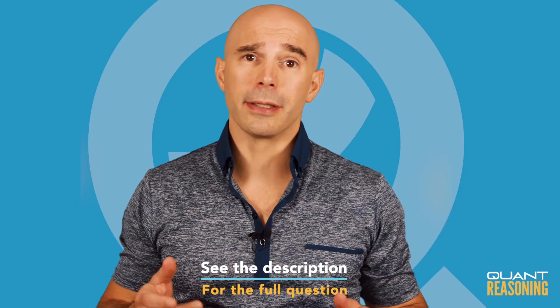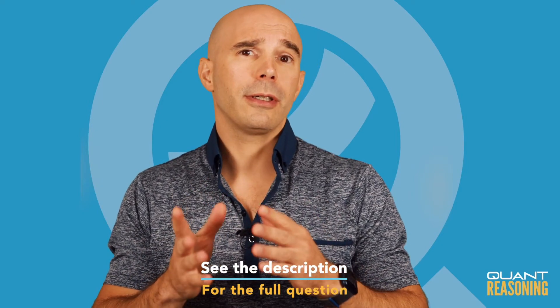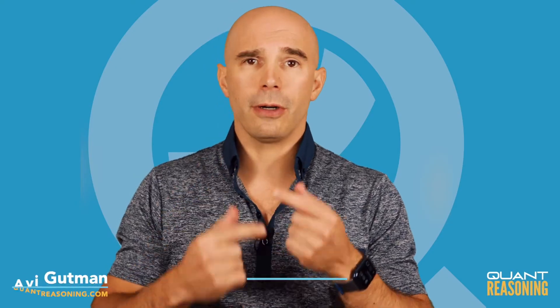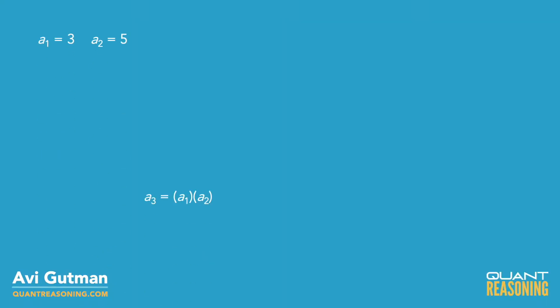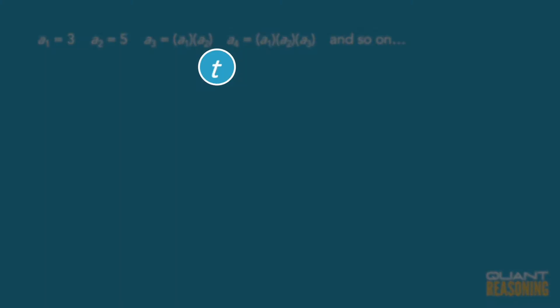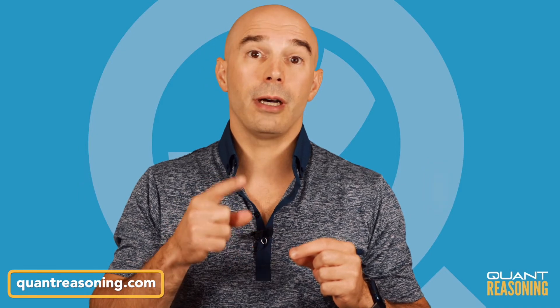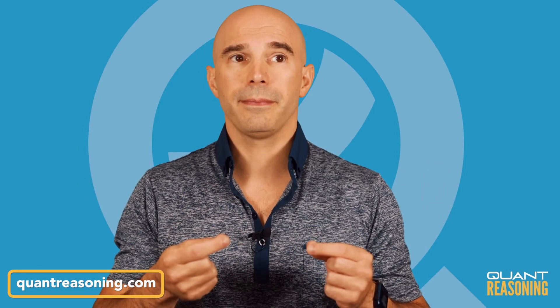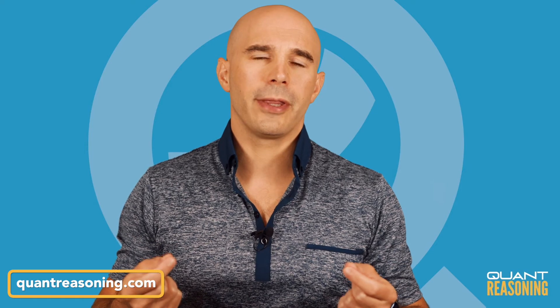They're describing a sequence here in which each term is the product of all of the preceding terms, and then they start talking about some term named t. The next term after t will be the product of all of the terms up to and including t. But how can I figure out what that product is?